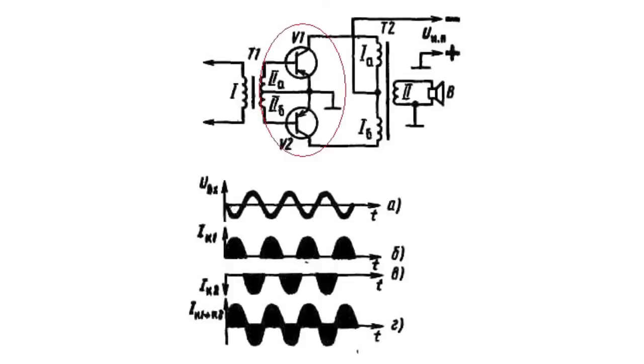Every transistor and section of the secondary bonding of the inter-cascade transformer and primary bonding of the outlet transformer referent to it is a standard one-stroke amplifier. Together, they form a two-stroke output amplifier.